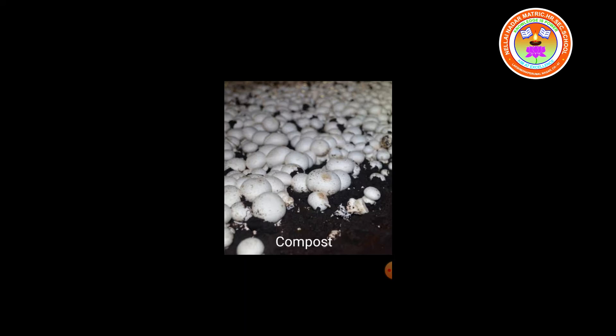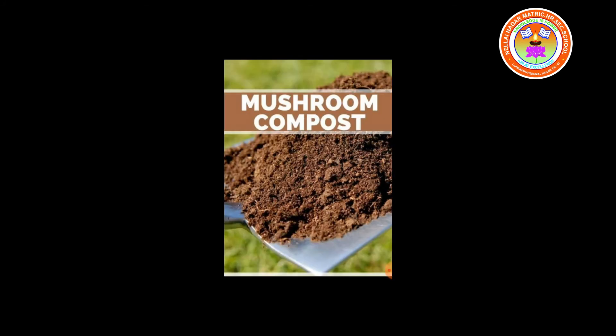The very first stage is composting. What do you mean by compost? Compost is prepared by mixing paddy straw with a number of organic materials like cow dung and inorganic fertilizer. For synthetic compost, preferably wheat or rice straw is used.